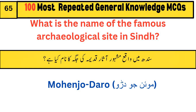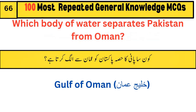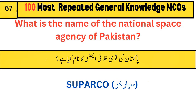What is the name of the famous archaeological site in Sindh? Mohenjo-daro. Which body of water separates Pakistan from Oman? Gulf of Oman. What is the name of the national space agency of Pakistan? SUPARCO.